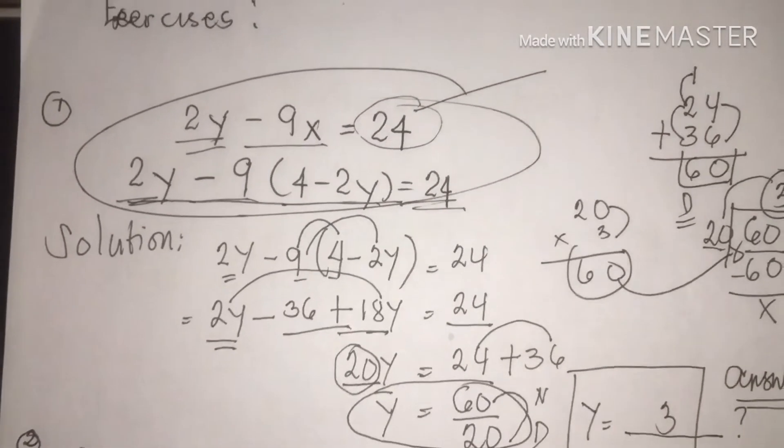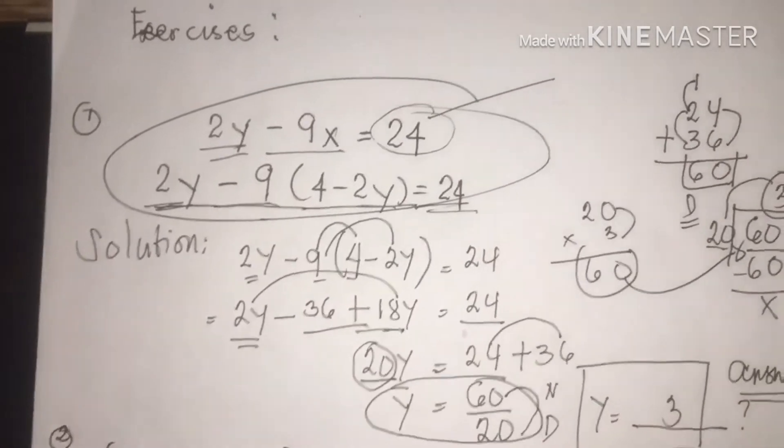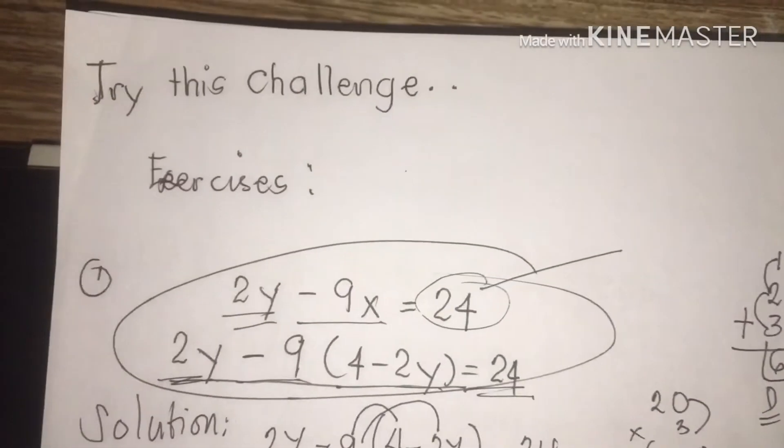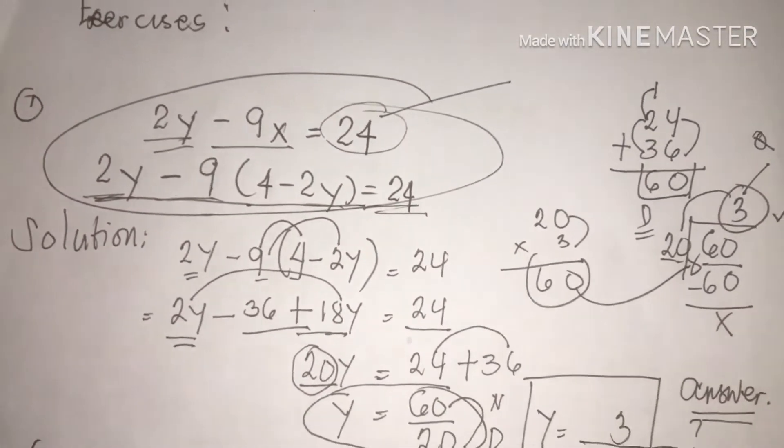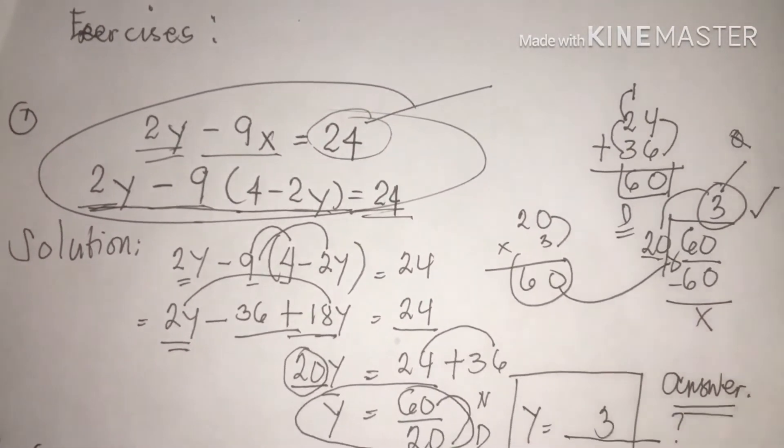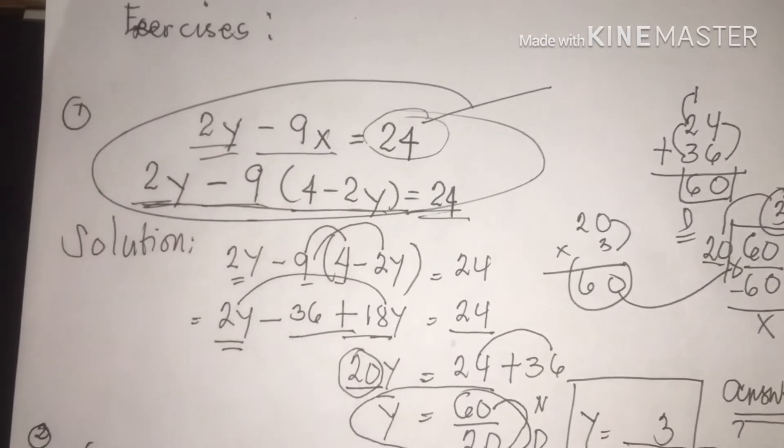Again, simplify if needed. Solve one equation in terms of the other variable. Third is substitute what you get in step 2 into the other equations. Four is solve for the remaining variable. And fifth is solve for the other variable. We are going to proceed to number 2.